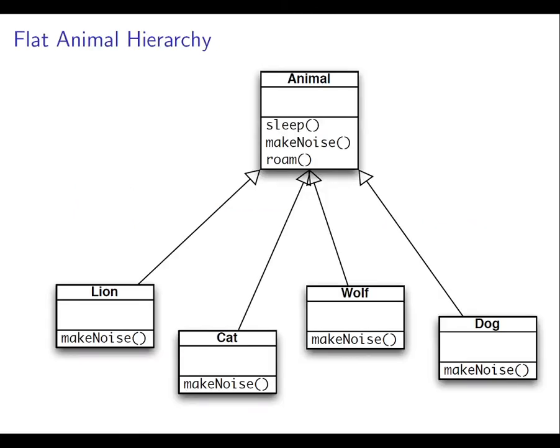We can have a flat animal hierarchy, meaning that each class inherits only from one other class. Each class representing a kind of animal inherits directly from the animal class. Notice the way this diagram is showing the MakeNoise method separately in the subclasses but not showing the Sleep and Roam methods separately. That indicates that MakeNoise is being overridden or implemented specially in each of these subclasses, but Sleep and Roam are simply being inherited.